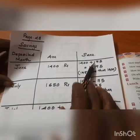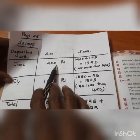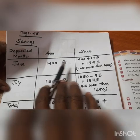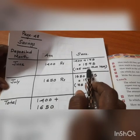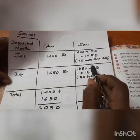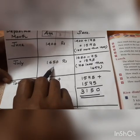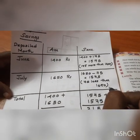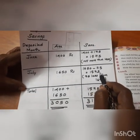Sanu deposited 75 rupees more than what Anu deposited. The deposit amount of Sanu is 1400 plus 175 — that is 175 more than 1400 — which is 1575. In the month of July, Sanu deposited 75 less than Anu's 1650. That is 1650 minus 75, which is 1575.